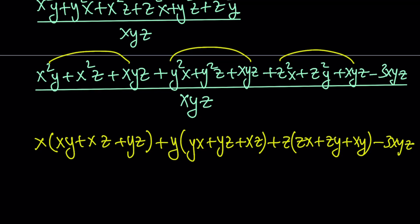Obviously xy + xz + yz is the same thing as yx + yz + xz, which is the same thing as zx + zy + xy. So they're all the same. It's just written differently.